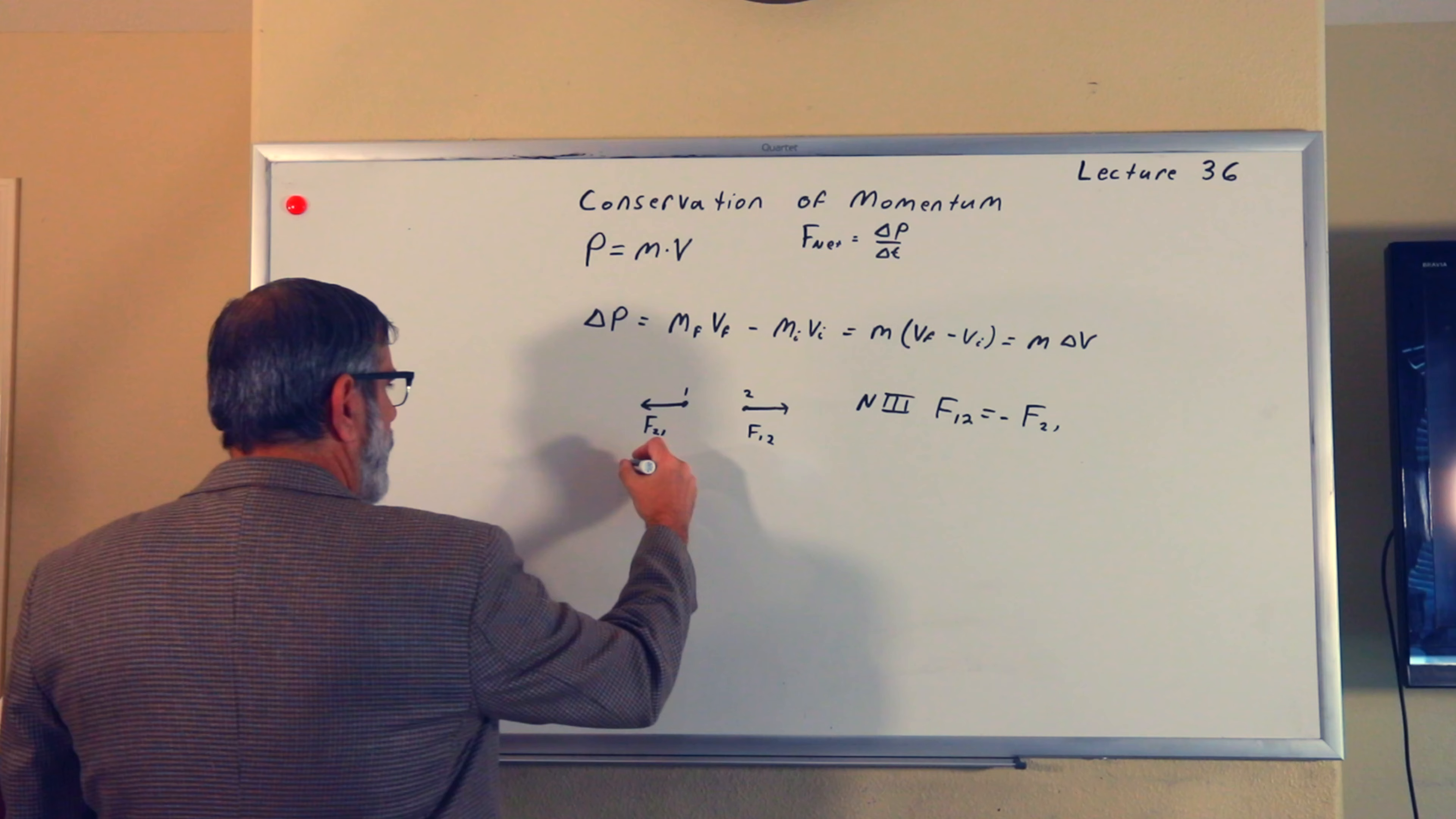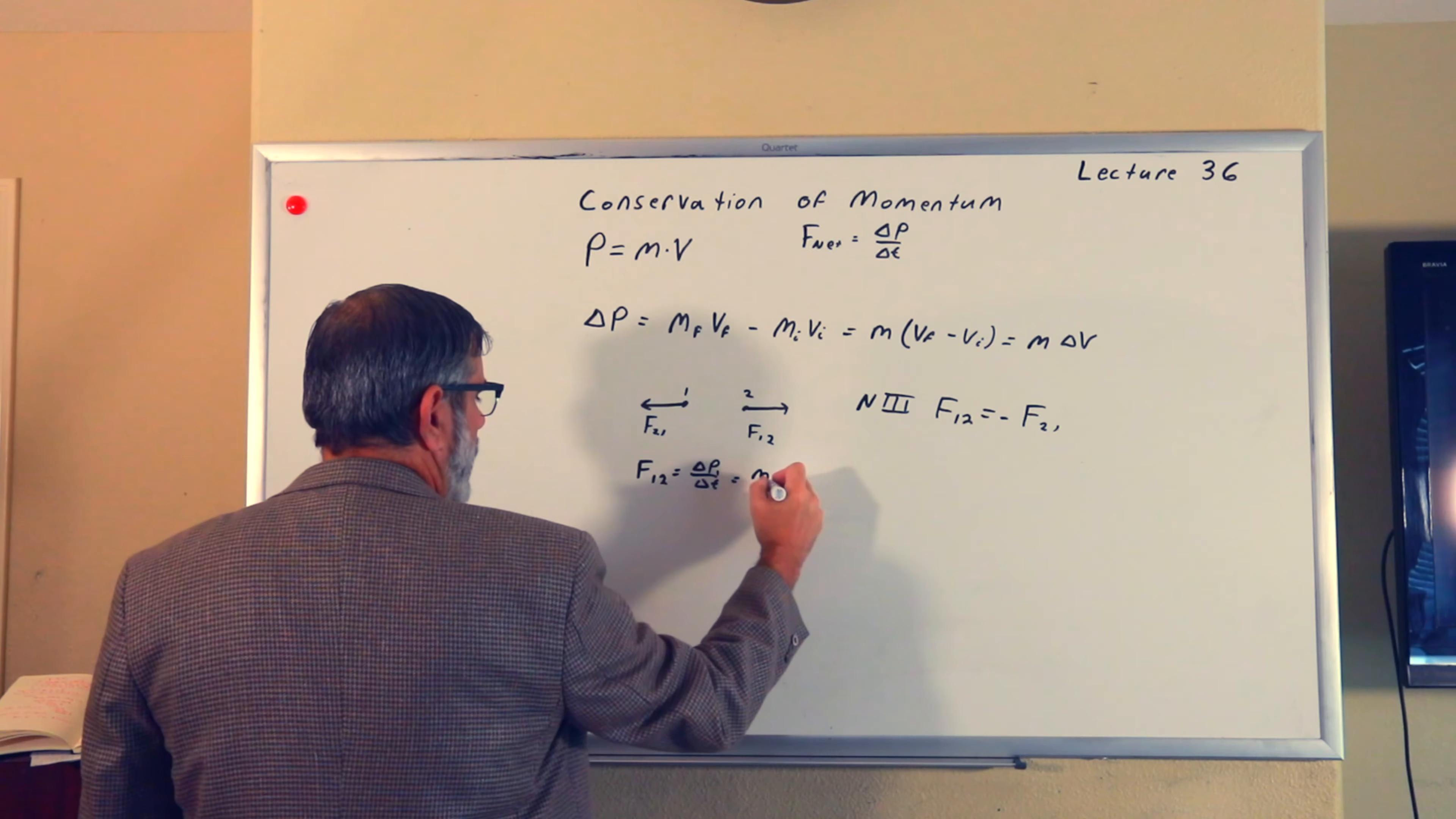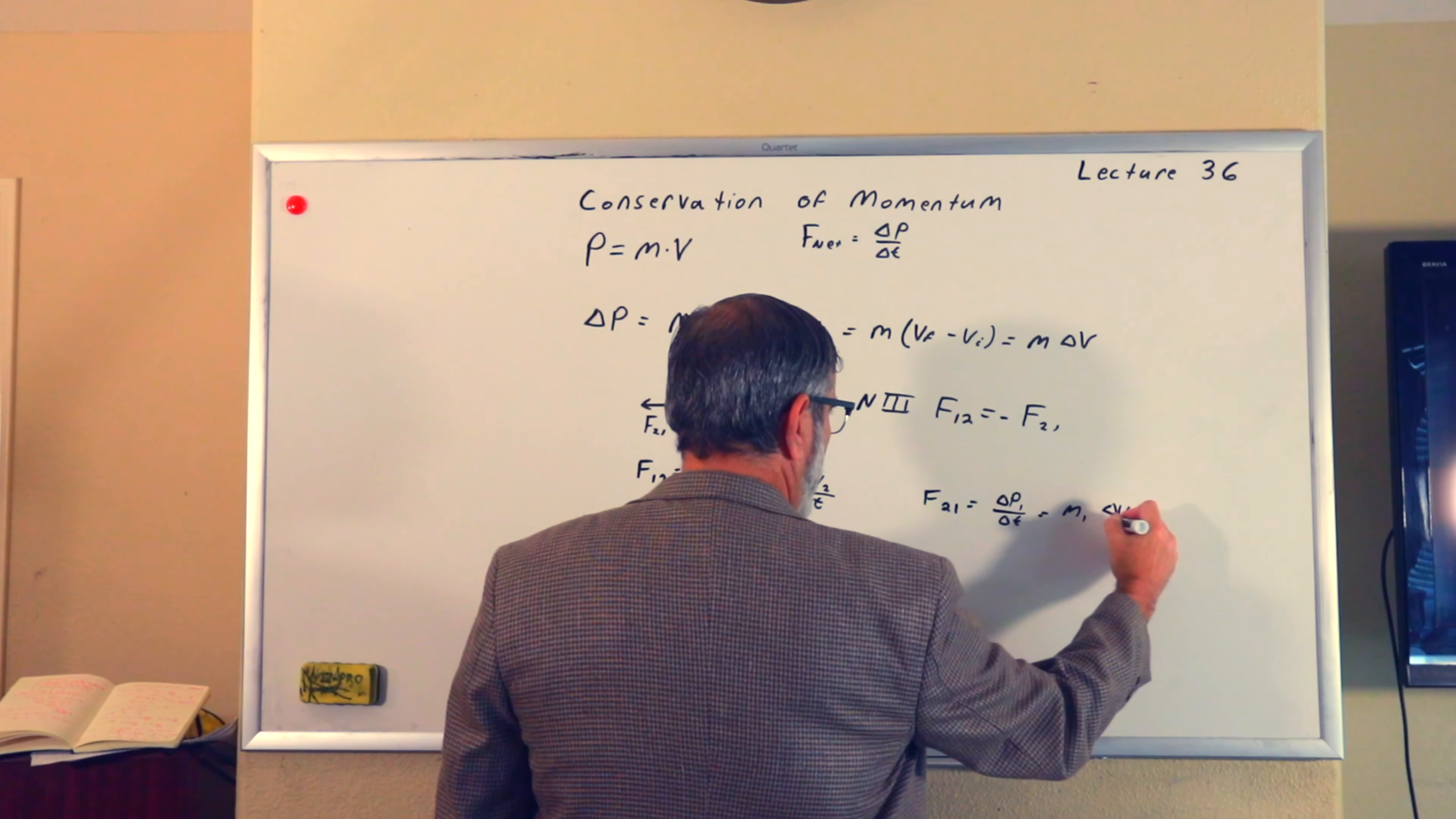We could write that F_12 equals delta P over delta T, which is the mass of two times delta V of two over delta T. And then F_21 is going to be equal to delta P_1 over delta T, which is the mass of one times delta V_1 over delta T.